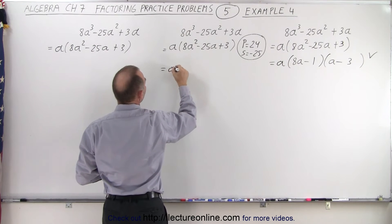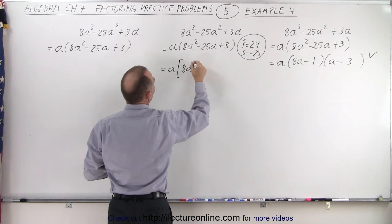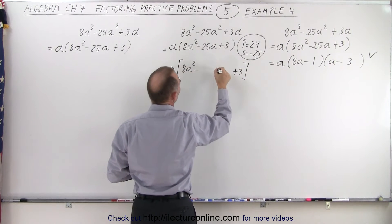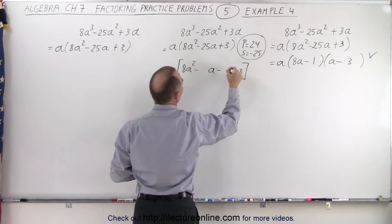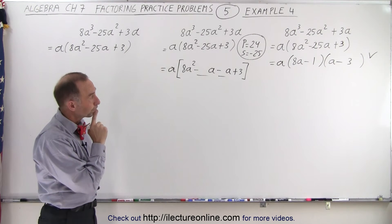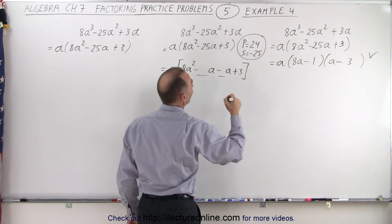So this is equal to a times 8a² plus 3. And then we have two middle terms, which need to be negative. And we need to find the numerical coefficients of those two middle terms.